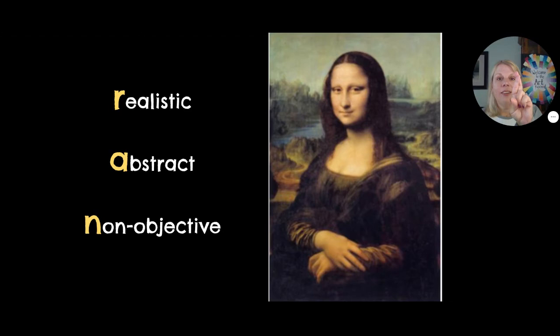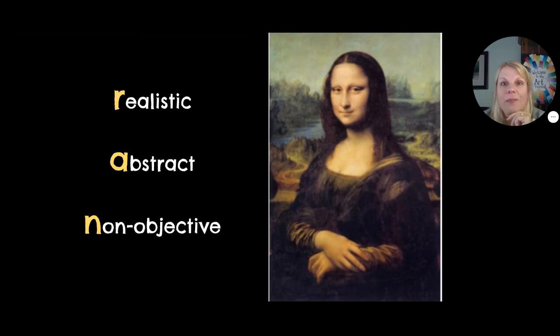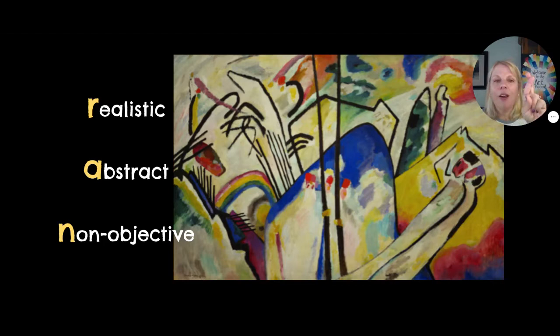Is it R or A or N? Realistic, abstract, or non-objective? Show me with your hands what you think this is. Yeah, it's realistic. The Mona Lisa is probably the most famous painting in the entire world and it really was a portrait of a woman, painted very realistically.